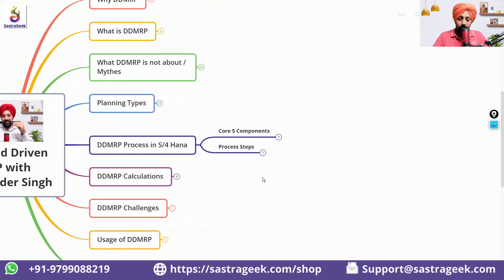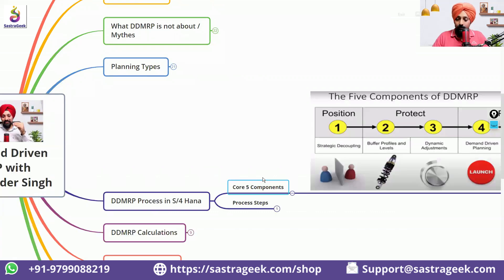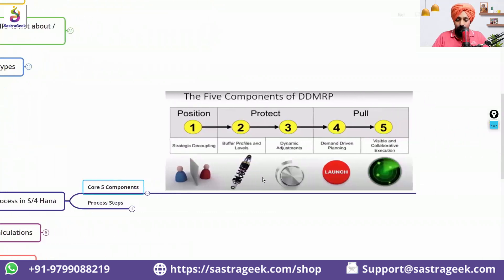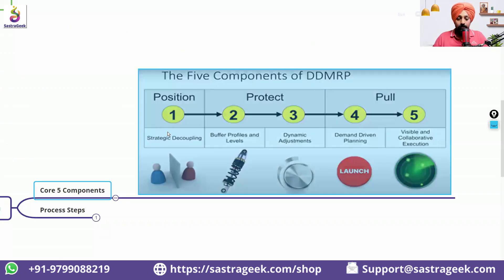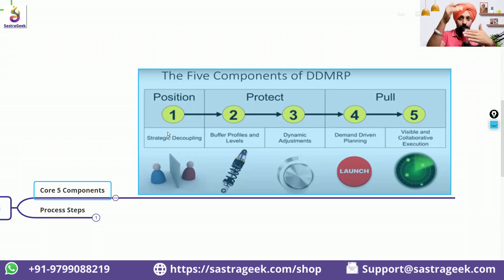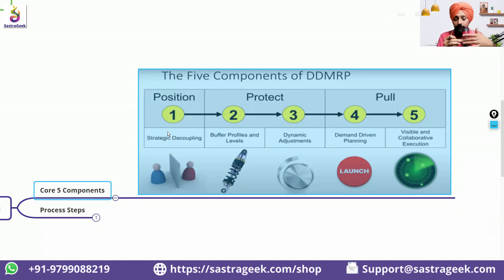DDMRP process in S4 HANA has five core components. First, we need to strategically decouple — deciding at which point and place we want to decouple and put the buffer stocks. Wherever you put the buffer stock, it gets decoupled from your forecast planning. The decoupling lead time will be discussed in the next section.